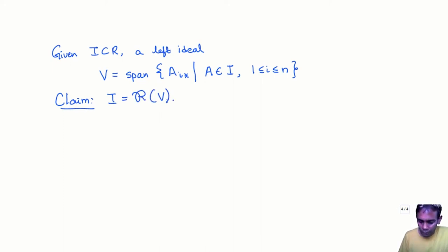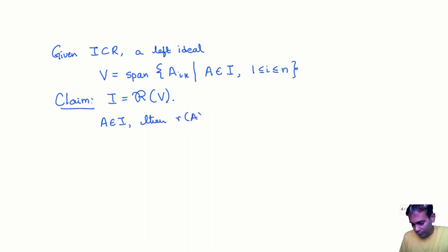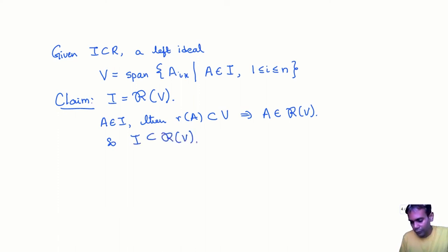First, if A belongs to I, then the row space of A is contained in V, since A is one of the matrices whose rows span V. So if A belongs to I then A belongs to R(V), meaning I is contained in R(V). What remains is to show the other inclusion — that R(V) is contained in I.